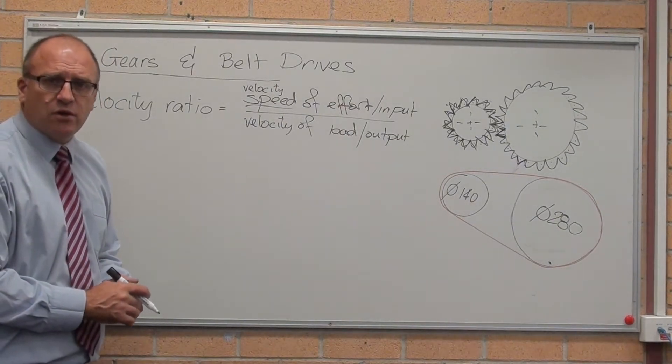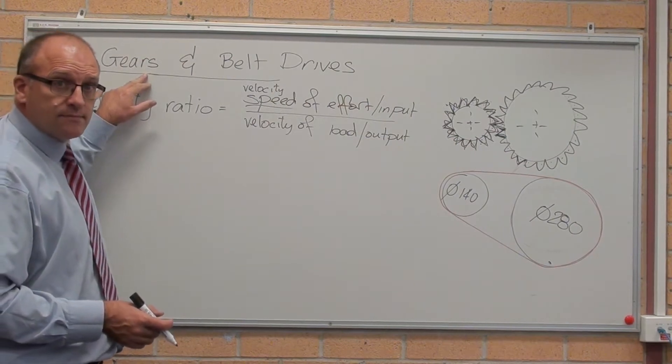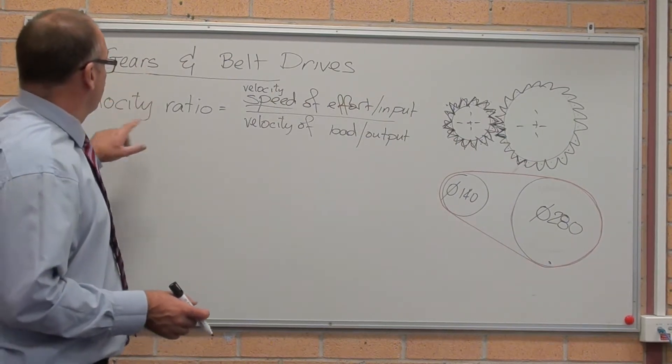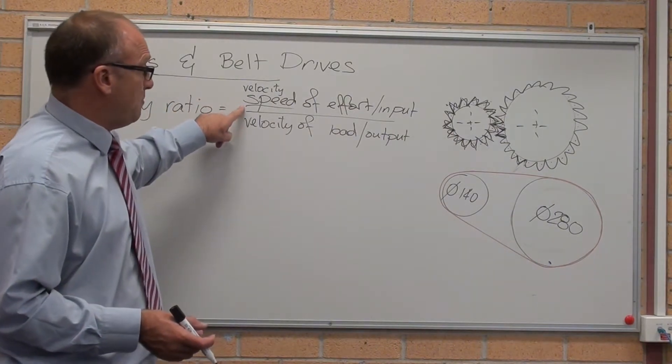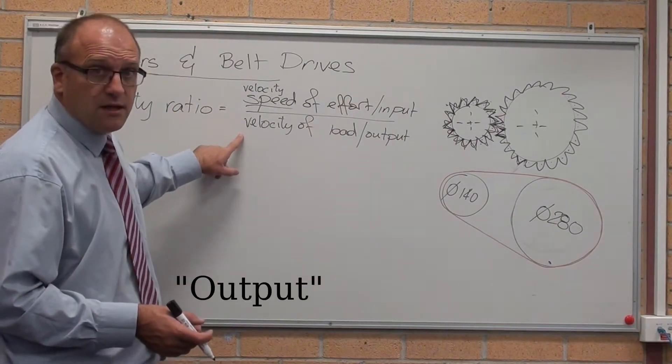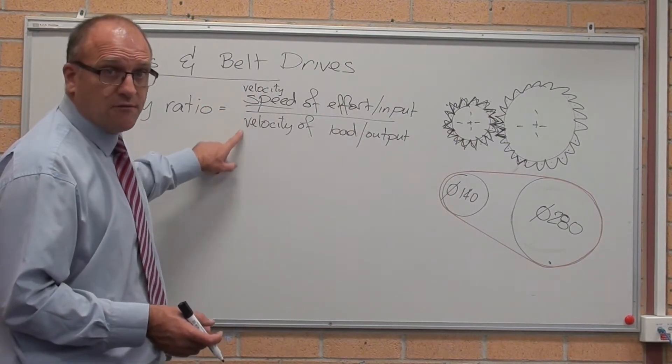The fifth machine I've saved till last is gears and belt drives, or a pulley drive. The velocity ratio is the speed of the input divided by the speed of the output. The speed of the effort divided by the speed of the load.